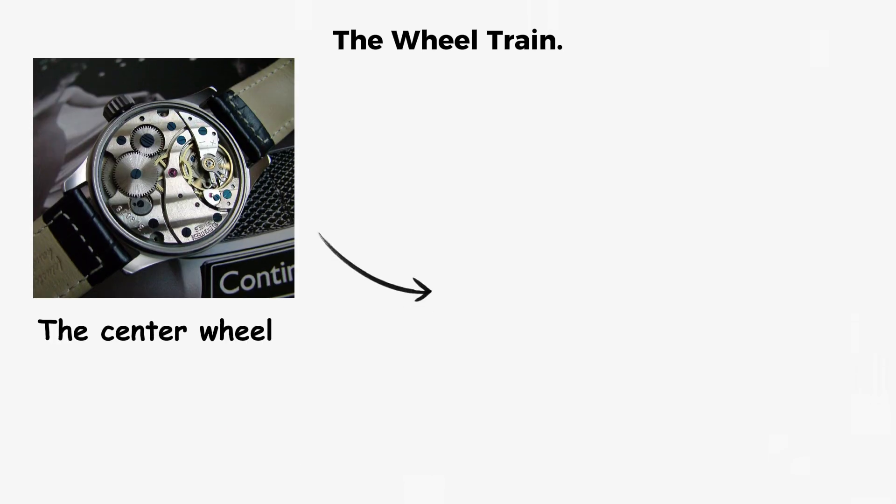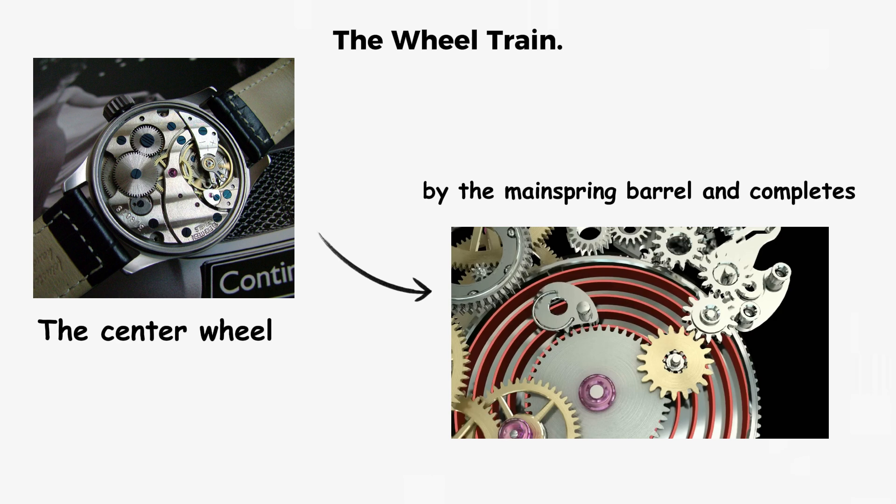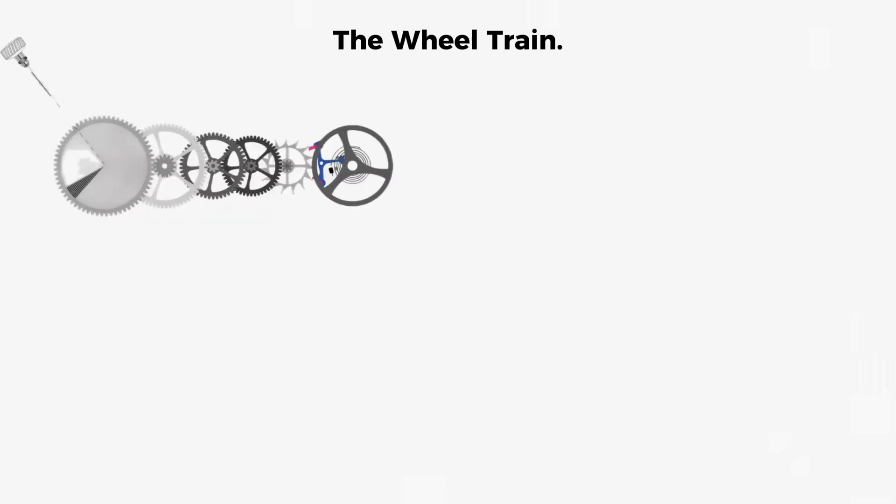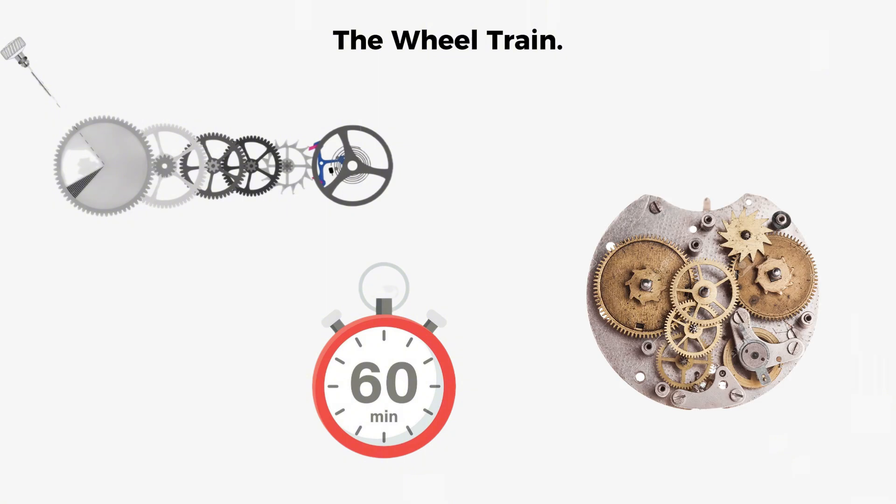The center wheel is driven directly by the mainspring barrel and completes one full rotation per hour. This wheel holds the minute hand, and its 60-minute journey is often divided into minute marks on the watch face.